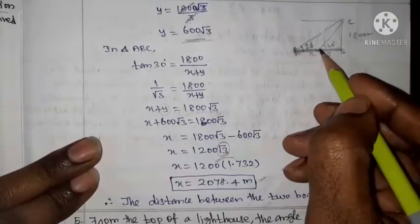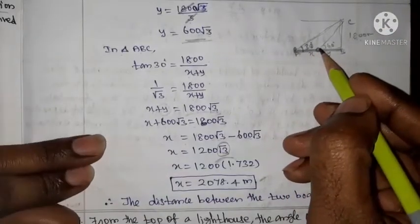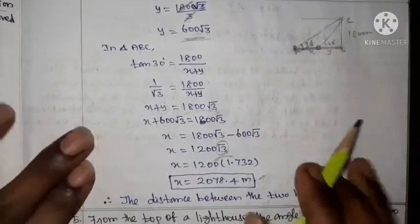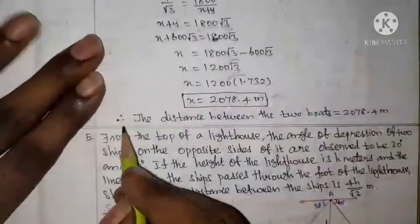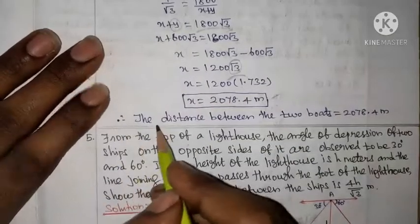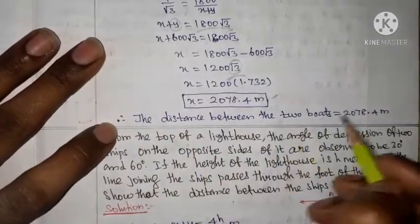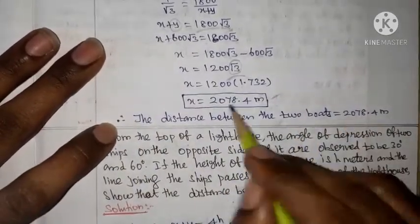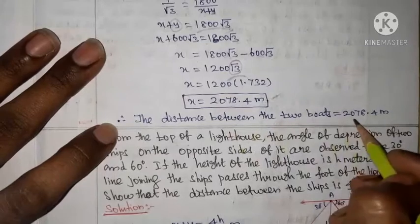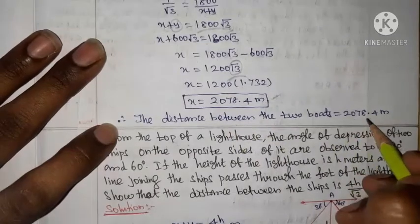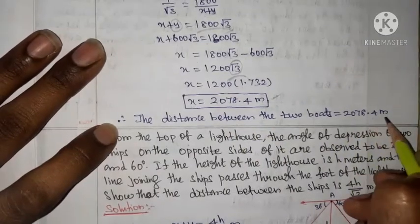Therefore, the distance between the two boats is equal to 2078.4 meters.